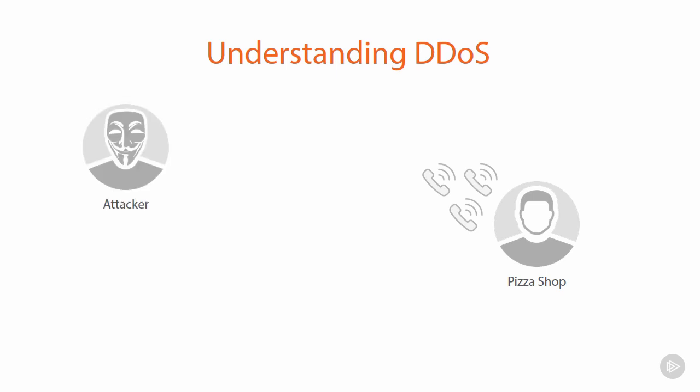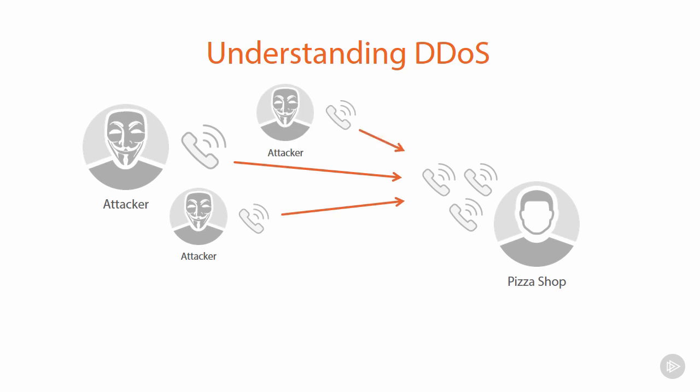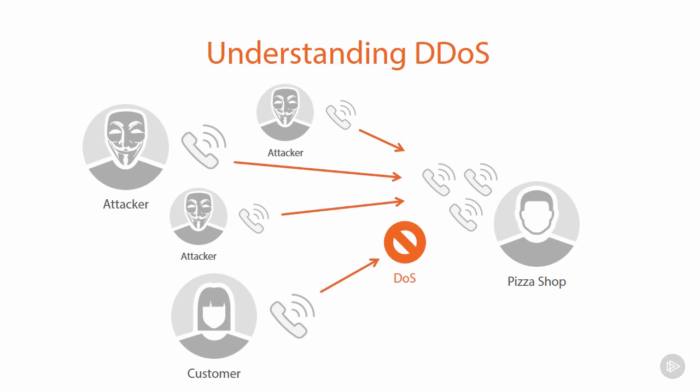So we have our attacker, who has their phone and calls into the pizza shop same as before. Except what's different this time is it's not just the one attacker — we have multiple sources with their own phones making calls to the pizza shop. See how the attack is now distributed; it's coming from multiple different origins. And the end result is the same: once we bring in the customer, if all those lines are tied up, they're not going to be able to get through to the service.